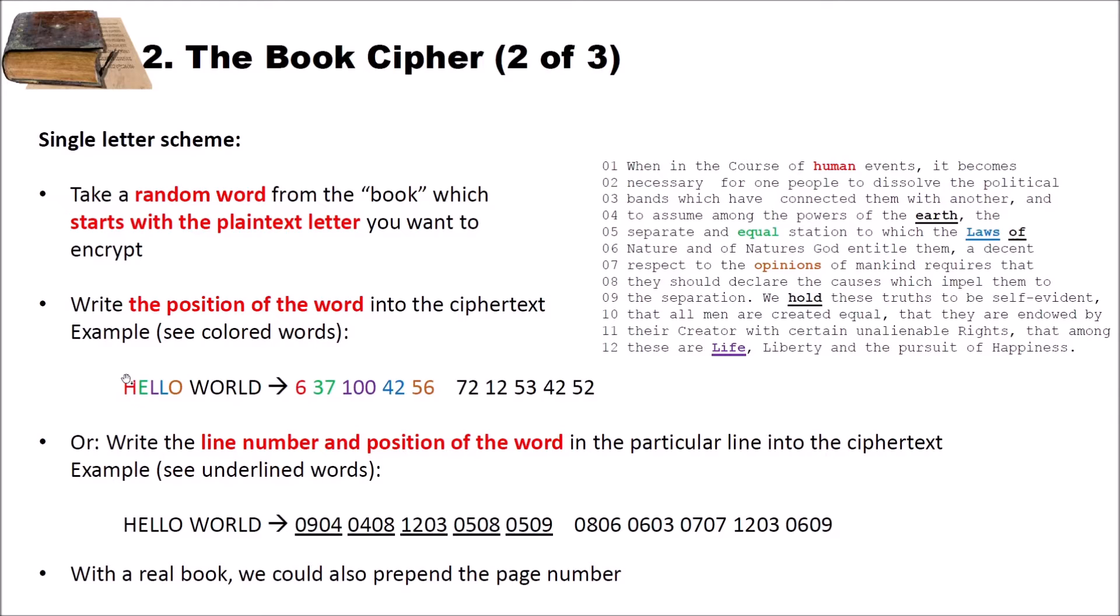We first encrypt the h. We search for a word starting with h in our document. We count the position 1, 2, 3, 4, 5 and 6. And we write down 6. The decryptor then reads the 6 here, counts also 1, 2, 3, 4, 5, 6. He is human and knows our first letter is h. The same with the e. We have the 37th position here. Then the l here is the 100 position. The l is the 42nd position. And the o is the 56th position. And we continue encrypting our text using this document here.